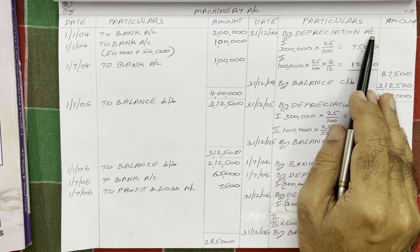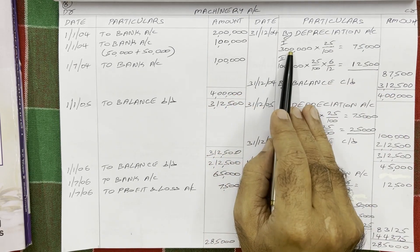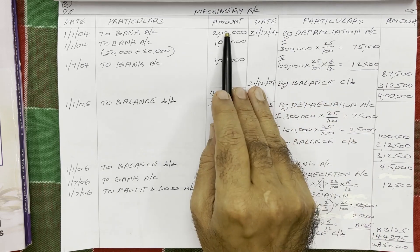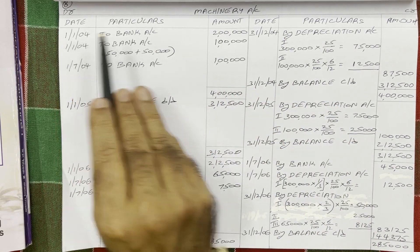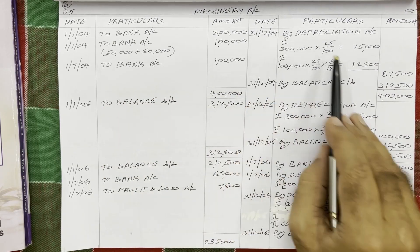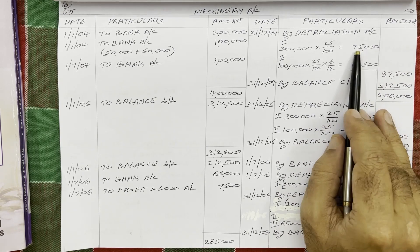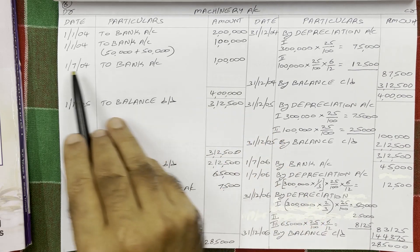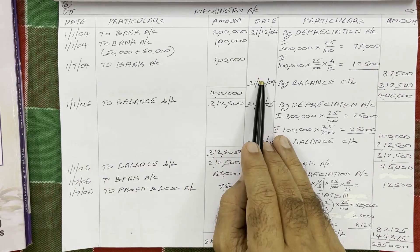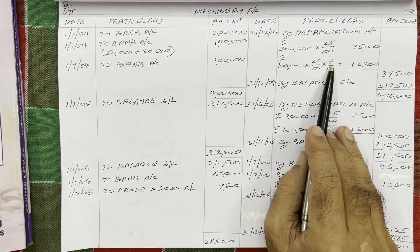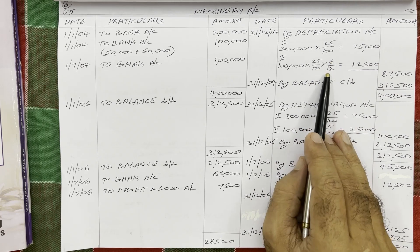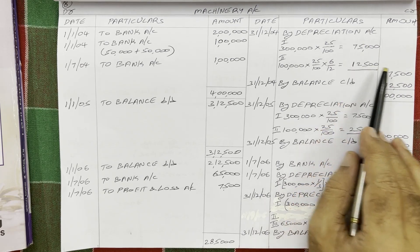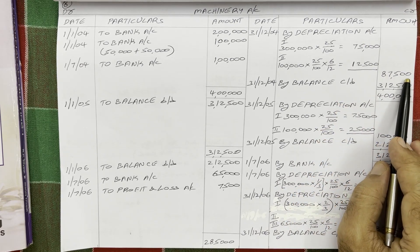By depreciation account: first asset cost is 3 lakh rupees at the rate of 25% for the full year, because the first asset was purchased on 1st January — from 1st January to 31st December is a full year — so months are not required. Depreciation = 75,000. Second asset cost is 1 lakh rupees, purchased on 1st July, so used for 6 months only: 1 lakh × 25% × 6/12 = 12,500. Total depreciation in outer column: 87,500.